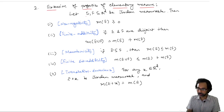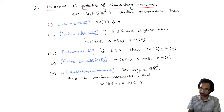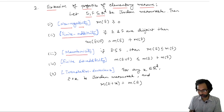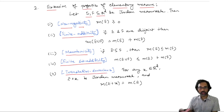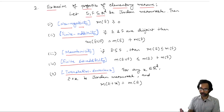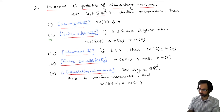The second part concerns the extension of properties of the elementary measure. If E and F are Jordan measurable subsets of R^d, then Jordan measure satisfies non-negativity, finite additivity, monotonicity, finite subadditivity, and translation invariance — all inherited from the elementary measure. Let me prove finite additivity.